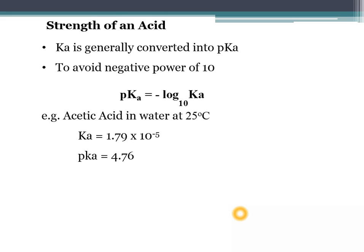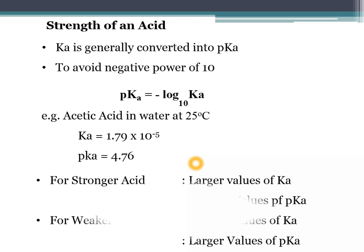For example, for acetic acid in water at 25°C, the Ka value calculated from this equation is 1.79 × 10⁻⁵. When we put this value into the pKa equation, we get a pKa value of 4.6. From this we conclude that for a stronger acid the Ka value will be larger and the pKa value will be smaller, and for a weaker acid the Ka value becomes smaller and the pKa value will become larger.